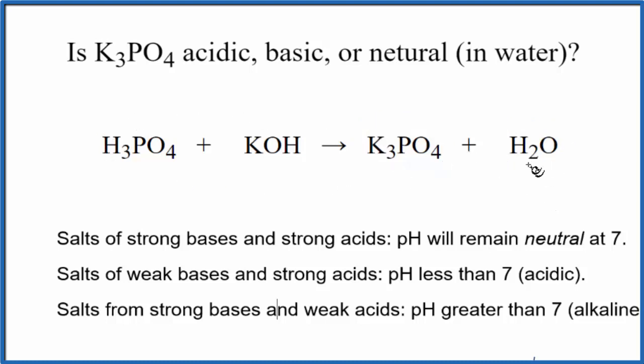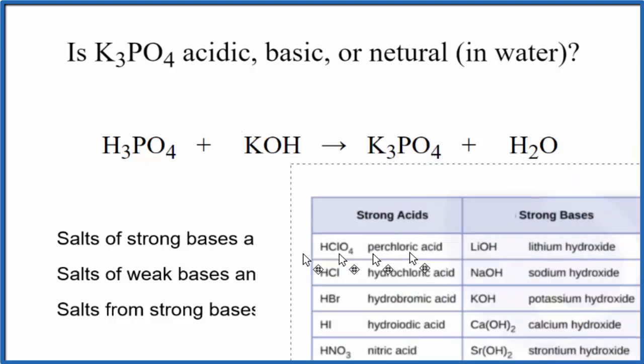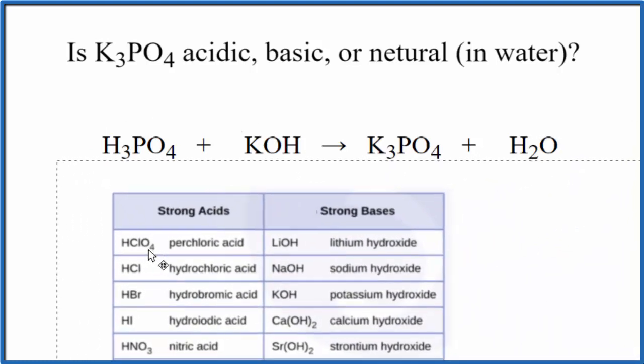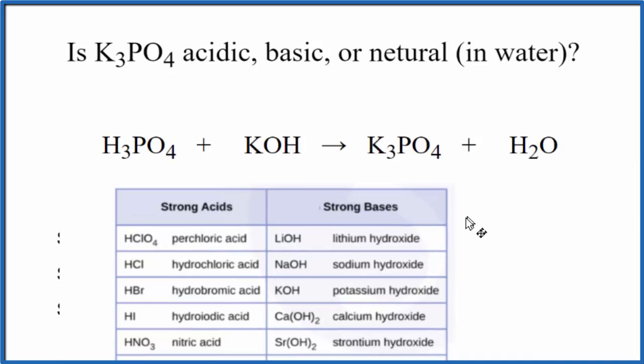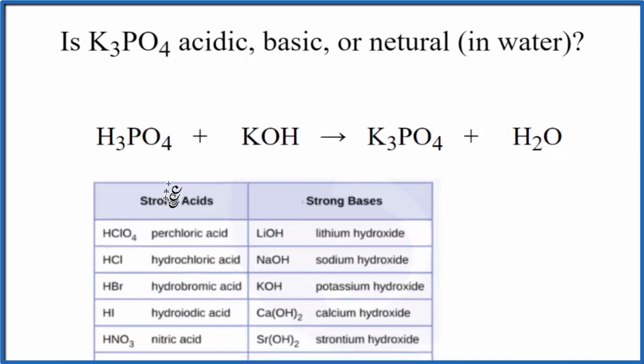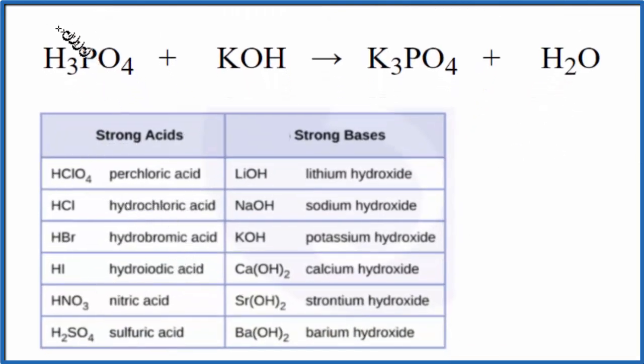Once we have the reaction we need to figure out the strength of the acid and the base. This table here can be really helpful in doing that. I recommend you actually memorize this. We're looking for phosphoric acid and it's not listed as a strong acid, which means it's a weak acid.